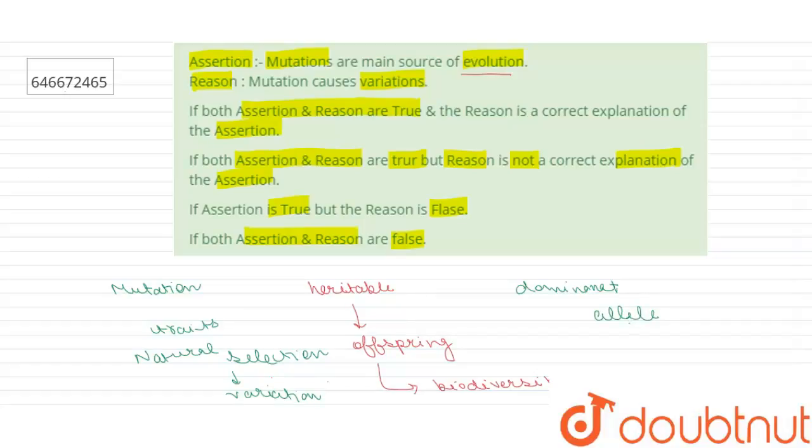Evolution is typically the result of accumulation of a large number of variations in a population over generations, and this process is called micro evolution. These variations in the genetic material are called mutations. So that means both assertion and reason are true.